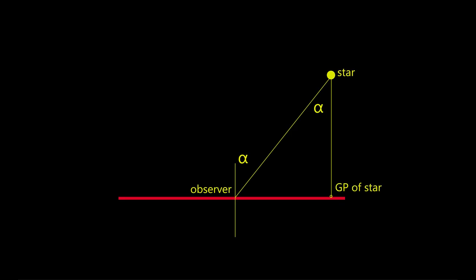When you unfold the circle to a straight line, you still have the measured zenith angle and you still have the GP of the star, but you have lost the relationship between the two.